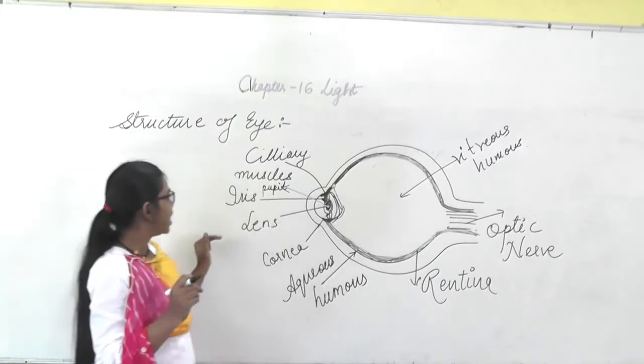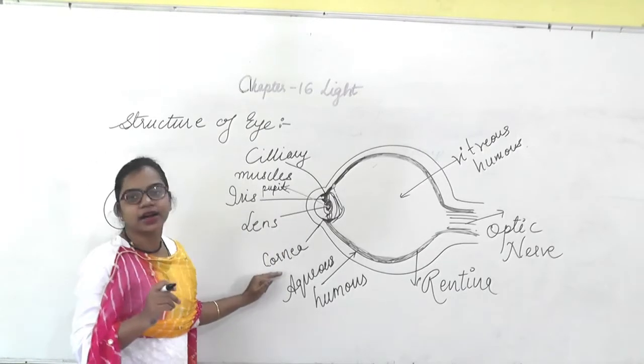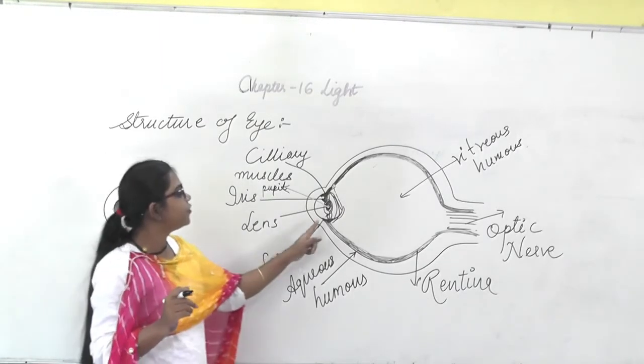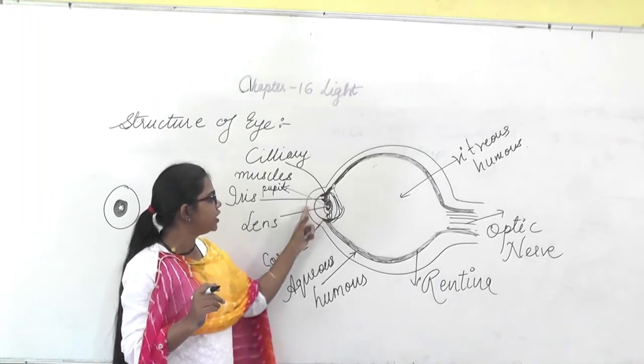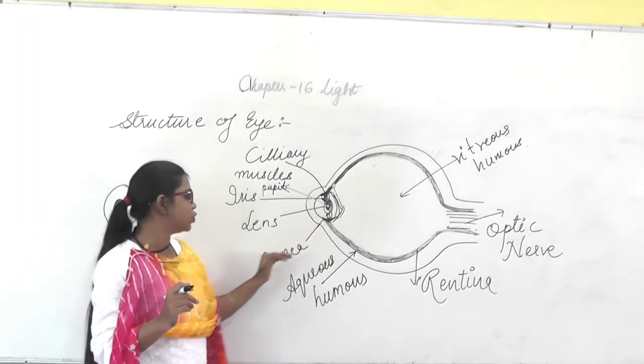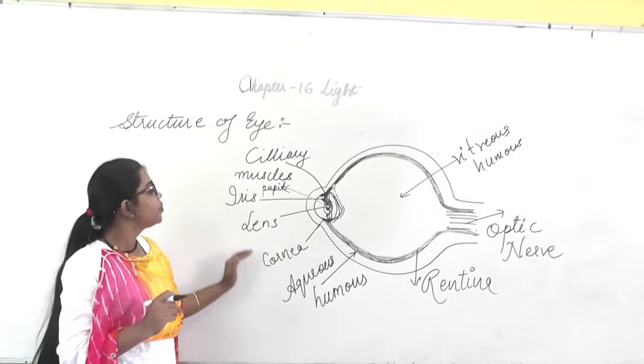Let's start with the cornea. The cornea is the front part of the eye. This front part of the eye is known as the cornea.